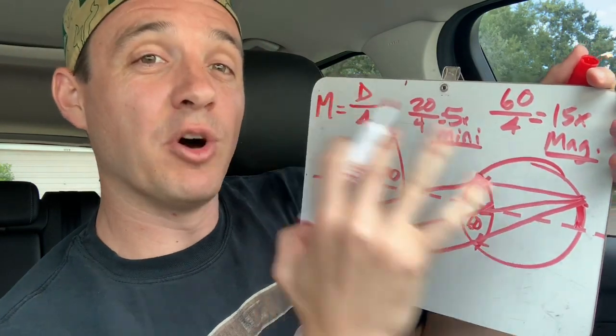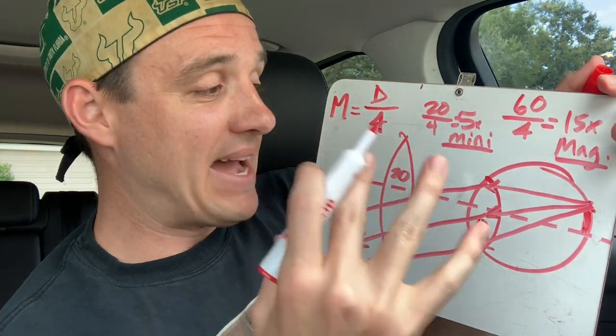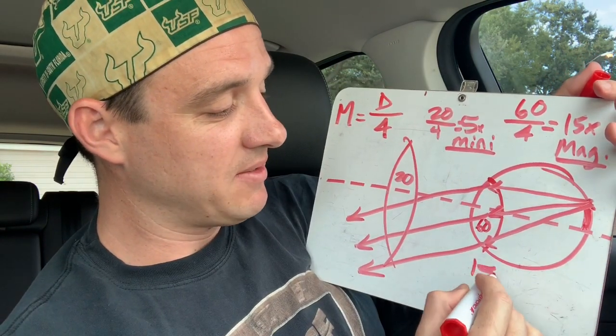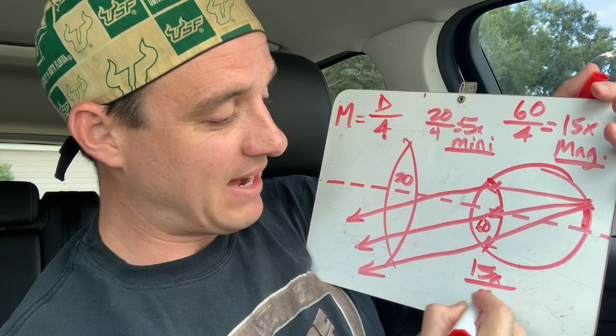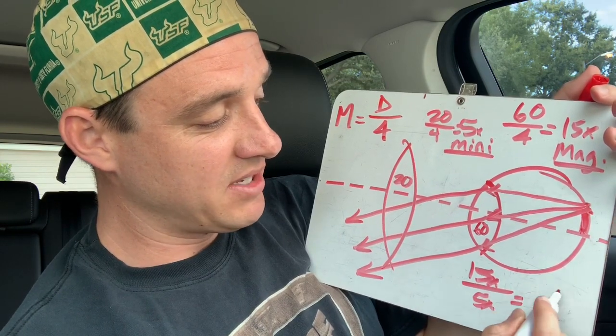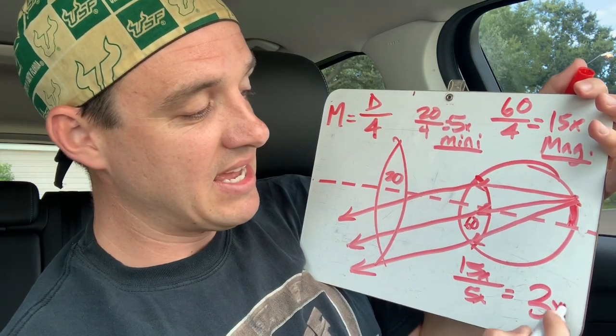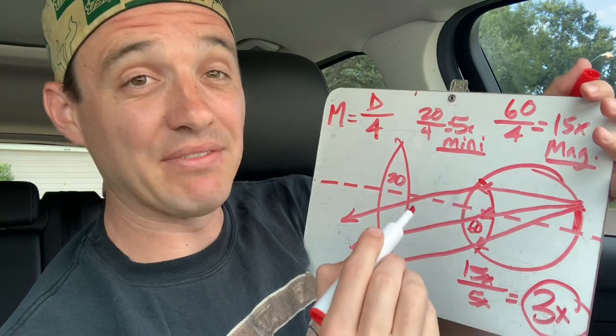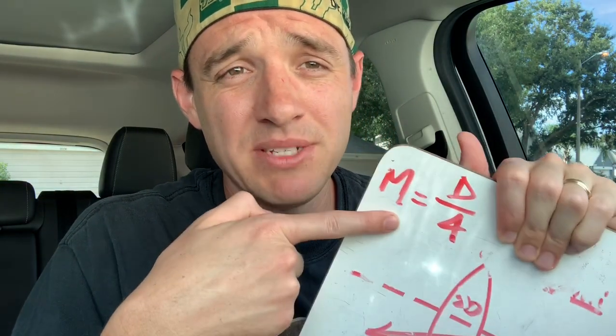To find our total magnification, we do 15x magnification divided by the 5x minification to get a net of 3x magnification. In summary: number one, this magnification formula only applies for objects viewed at a focal distance away from the lens; and number two, this formula becomes a minification formula for objects viewed through a lens at an infinite distance away.